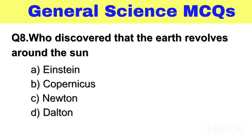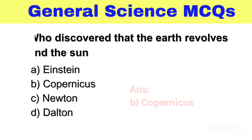Question No. 8. Who discovered that the earth revolves around the sun? Option A. Einstein, B. Copernicus, C. Newton, D. Dalton. The right answer, Option B. Copernicus.